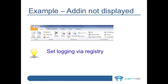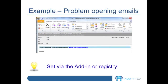Sometimes for EV administrators it is confusing to decide how to turn on logging, so let's see a couple of example scenarios. In the first example, if the add-in is not being displayed at all, then the best way to enable logging is to turn it on via the registry — without the toolbar being displayed, there really isn't another way. In the second example, if the problem is that some archived emails are not opening correctly and are just displaying the shortcut, then logging can be enabled via the add-in or via the registry.